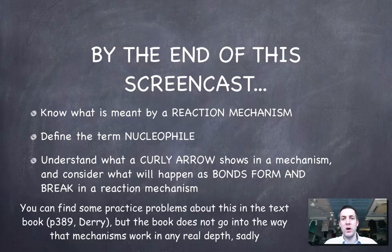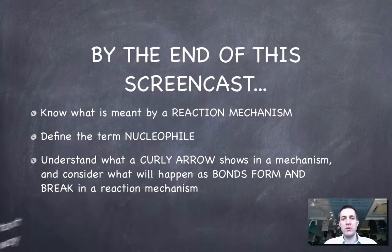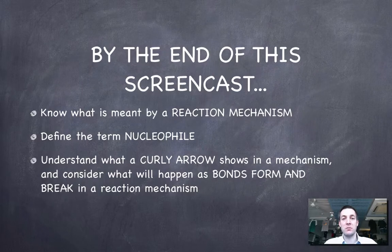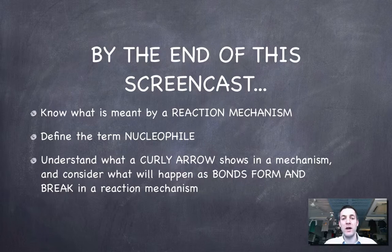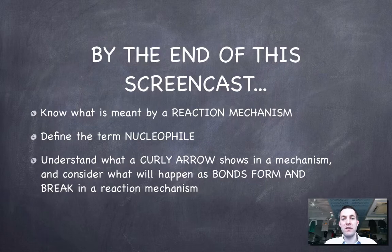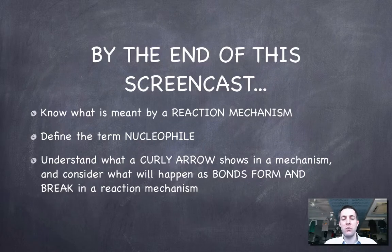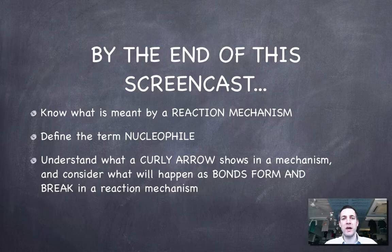We're going to be talking about things which help us explain why halogenoalkanes react the way they do. If I try and cover all this in one film it's going to be incredibly long. So we'll go through the principles here and put them into practice in the next film. By the end of this film we'll know what a reaction mechanism is, we'll be able to define the term nucleophile and see where these might fit into reaction mechanisms, and we'll understand what a curly arrow shows in a mechanism and what will happen as bonds form and break.